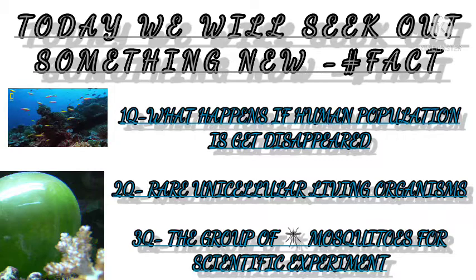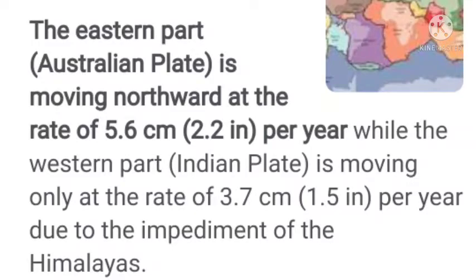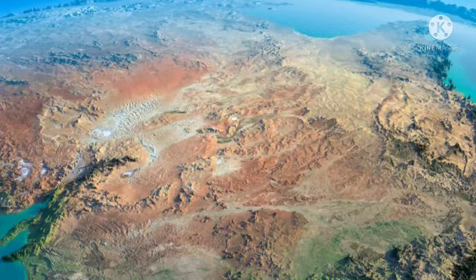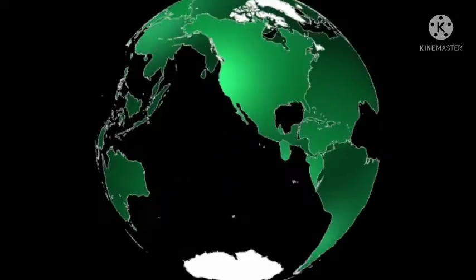The Australian plate is shifting towards the northward direction at the rate of 5.6 centimeters per year. When it comes to India, the same thing is happening — like Australia, our Indian plate is also moving, or you can say shifting, at the rate of 3.7 centimeters per year.